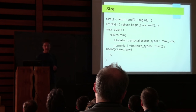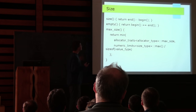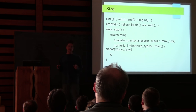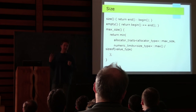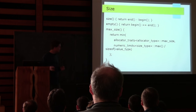So we have size, empty, and max_size. Most people probably have never used max_size. The general idea is: theoretically, ignoring the limits of your particular system — the exact amount of memory you have available — what is the most amount of elements that this container could allocate using its allocator and using the address space available?